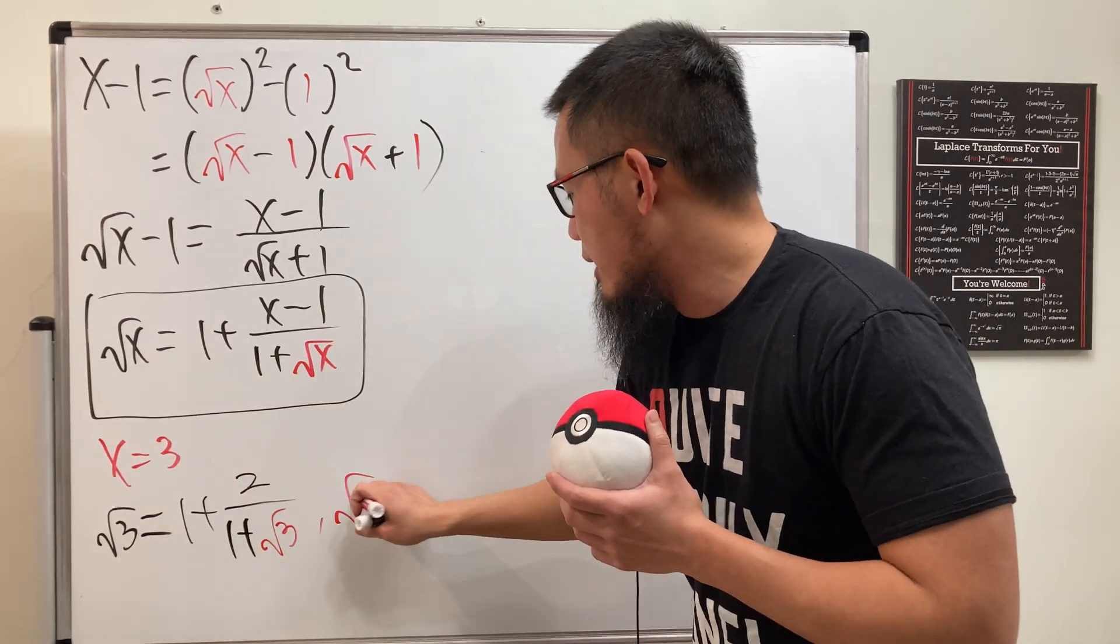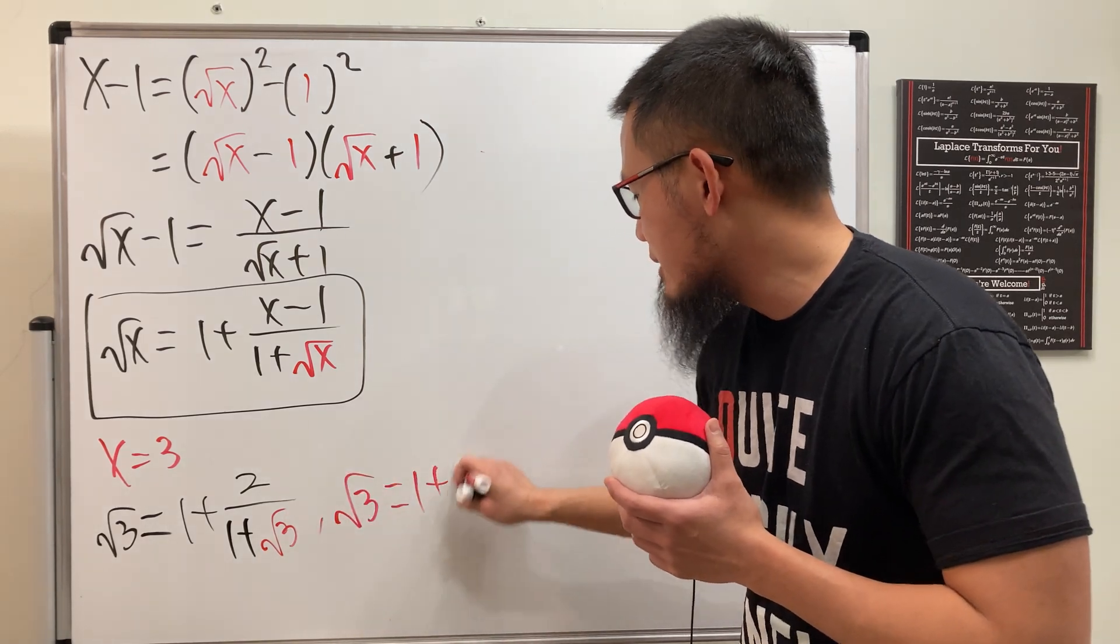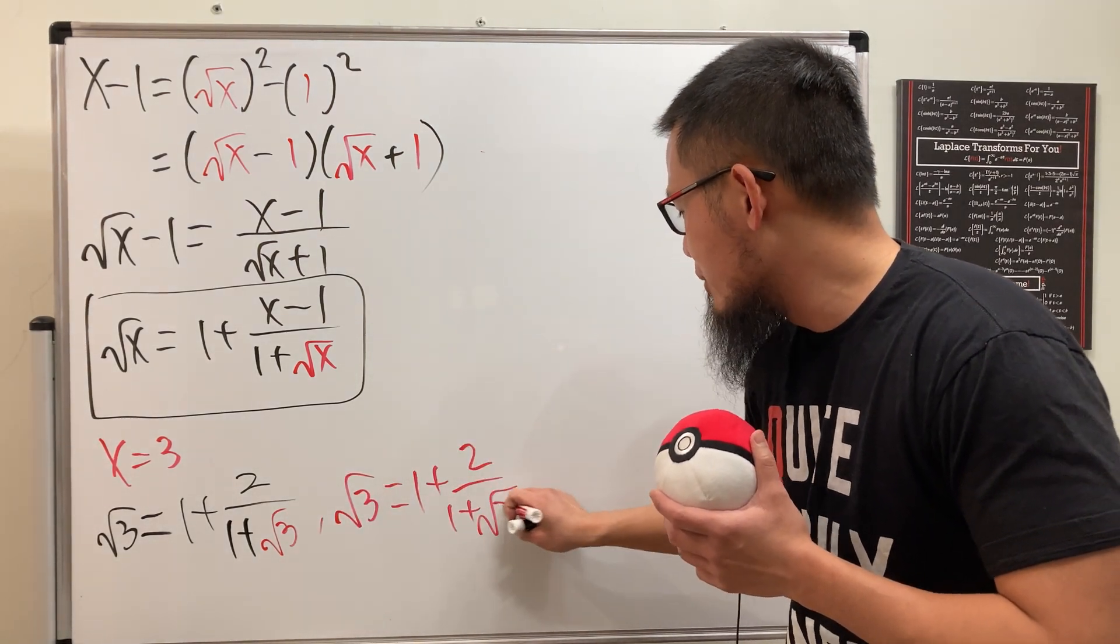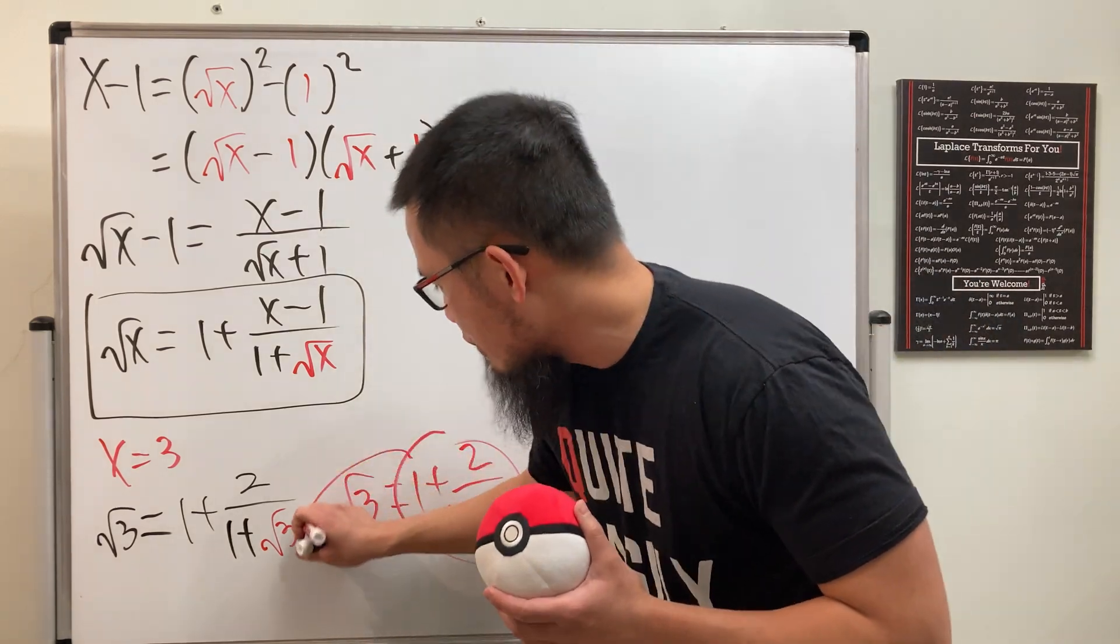But notice, square root of 3 is equal to what? Square root of 3 is of course equal to that, which is 1 plus 2 over 1 plus square root of 3, right? So what we can do is we can just pull this right there, right here.